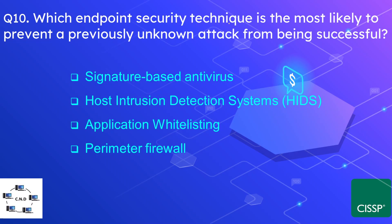Question number ten: which endpoint security technique is most likely to prevent a previously unknown attack from being successful? The options are signature-based antivirus, host intrusion detection system (HIDS), application whitelisting, and perimeter firewall. The correct answer is application whitelisting. Signature-based antivirus is for known attacks, HIDS is for detection not prevention, and perimeter firewall is a perimeter control, not an endpoint control.